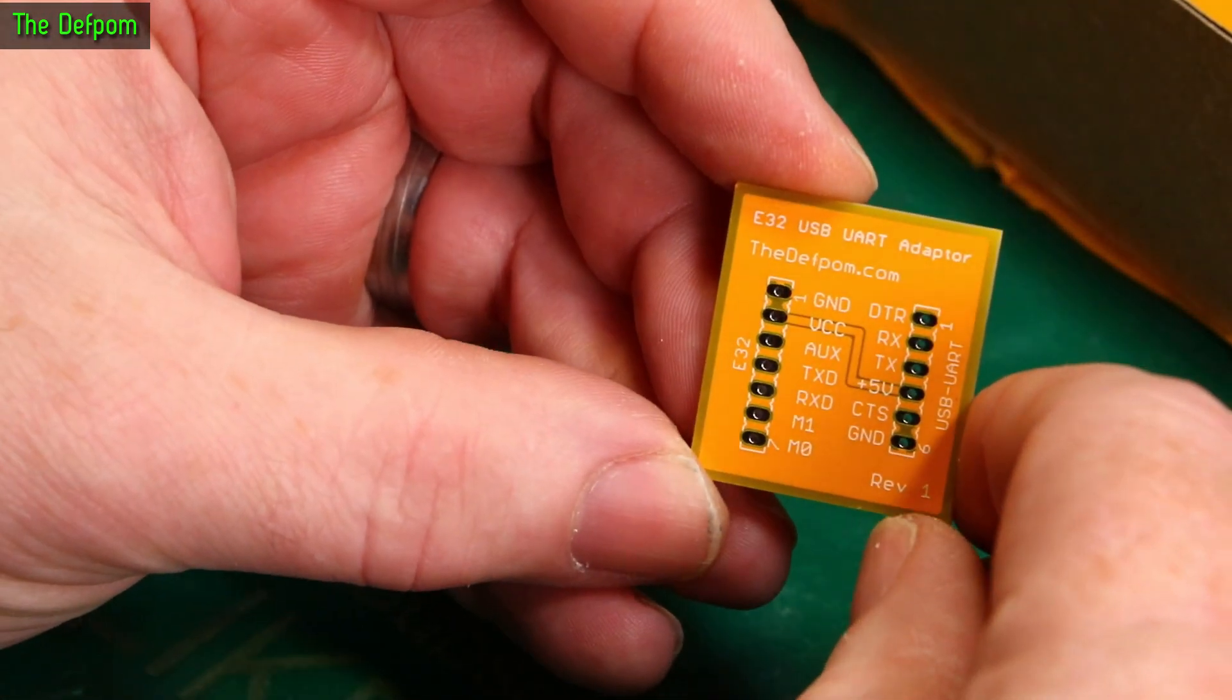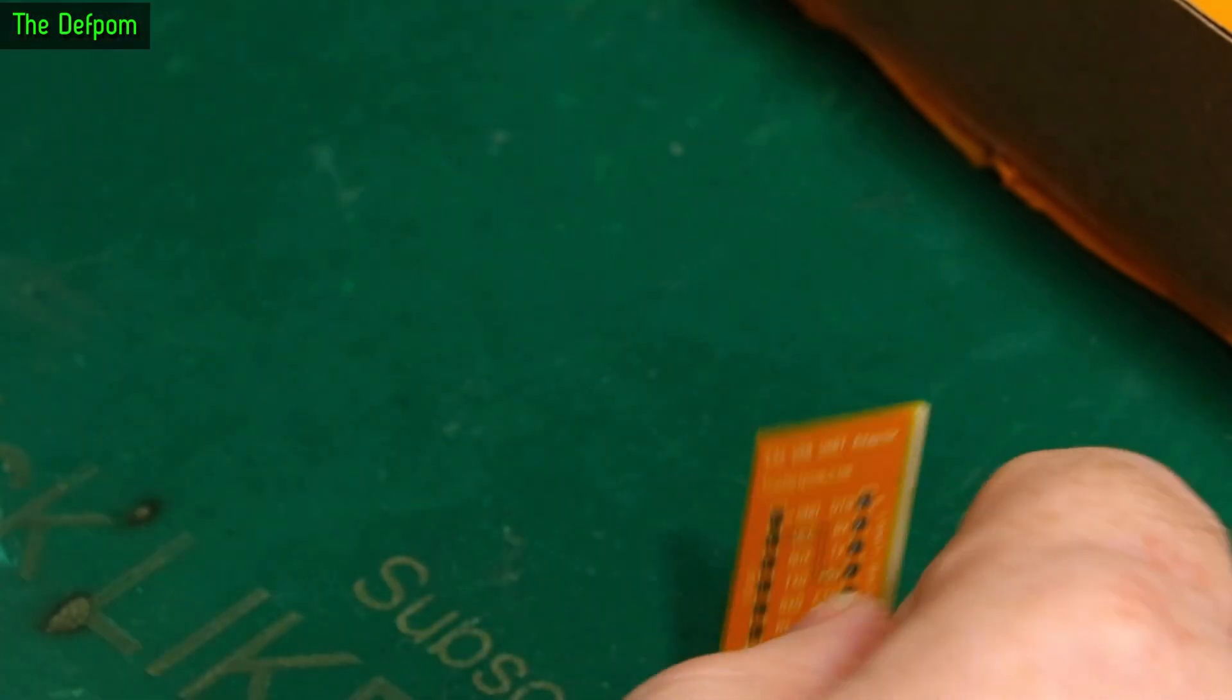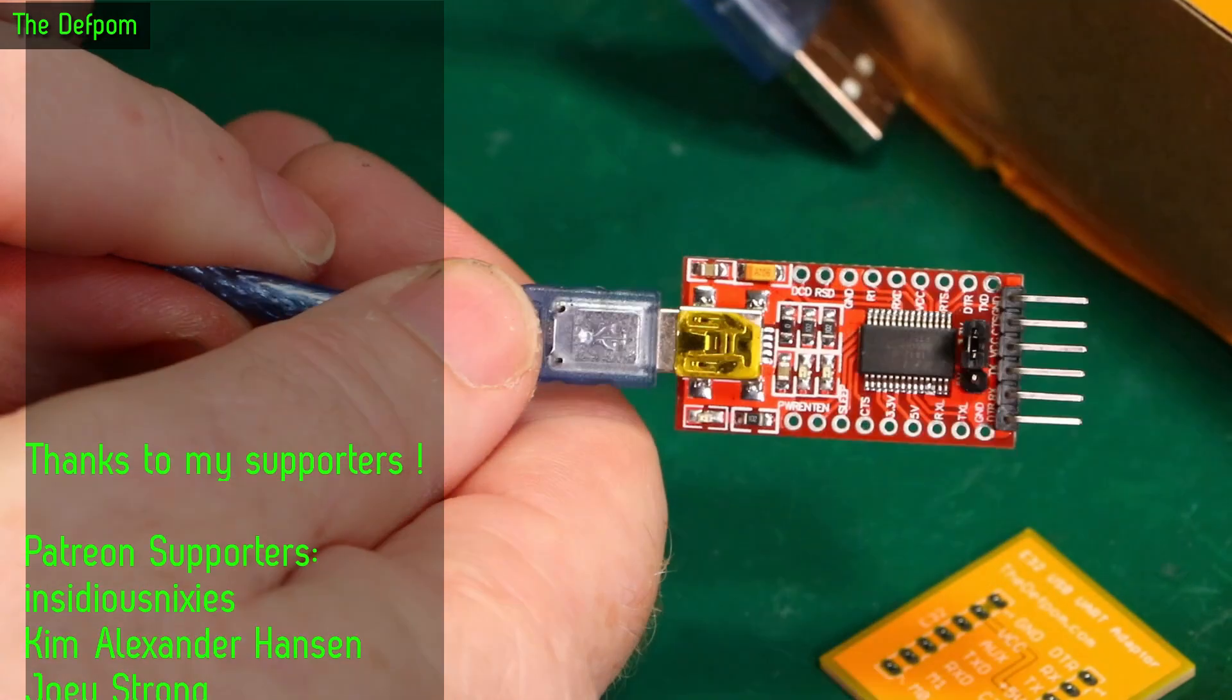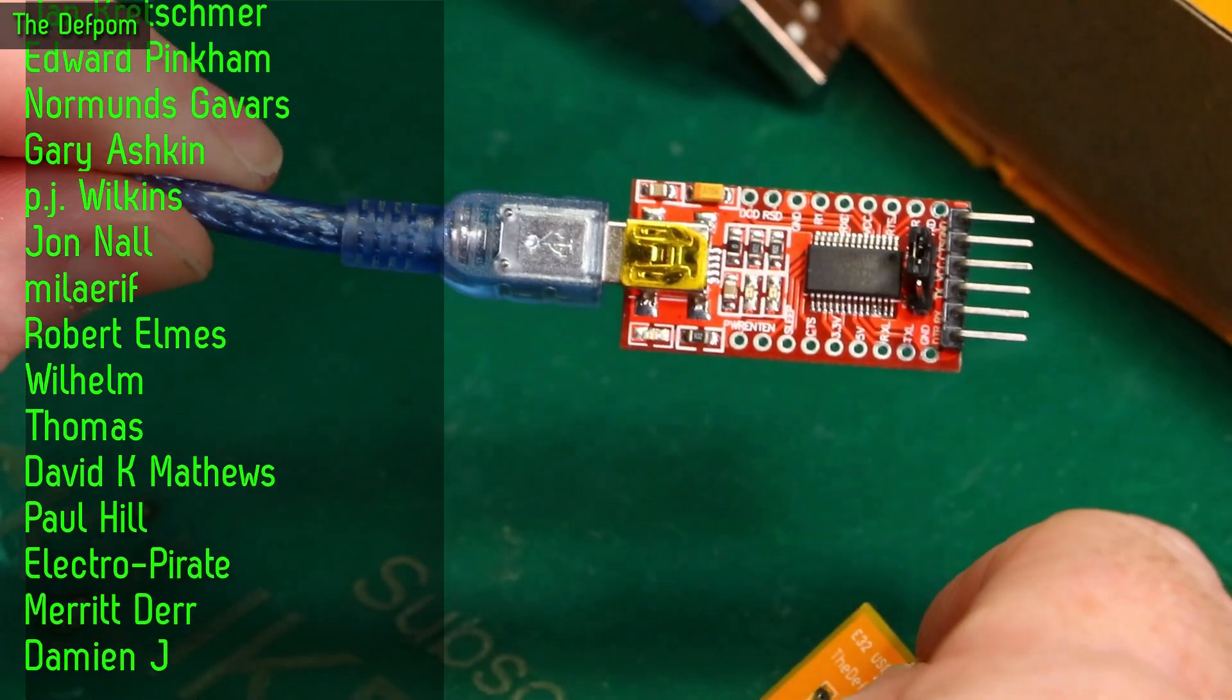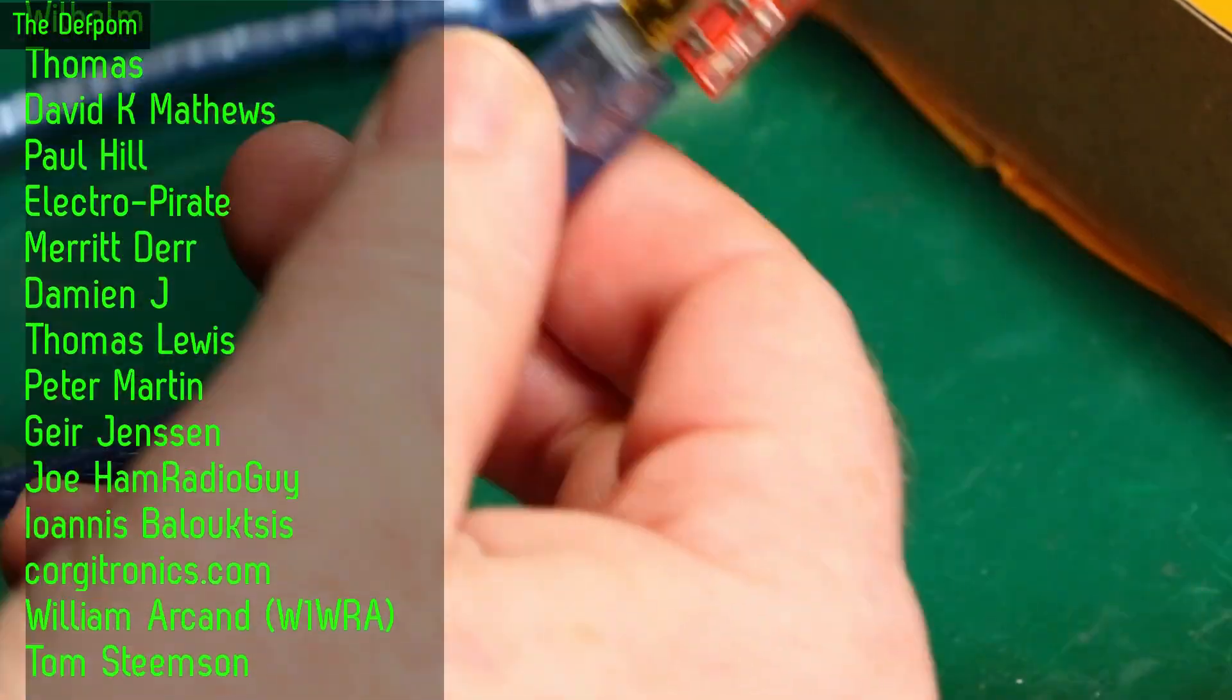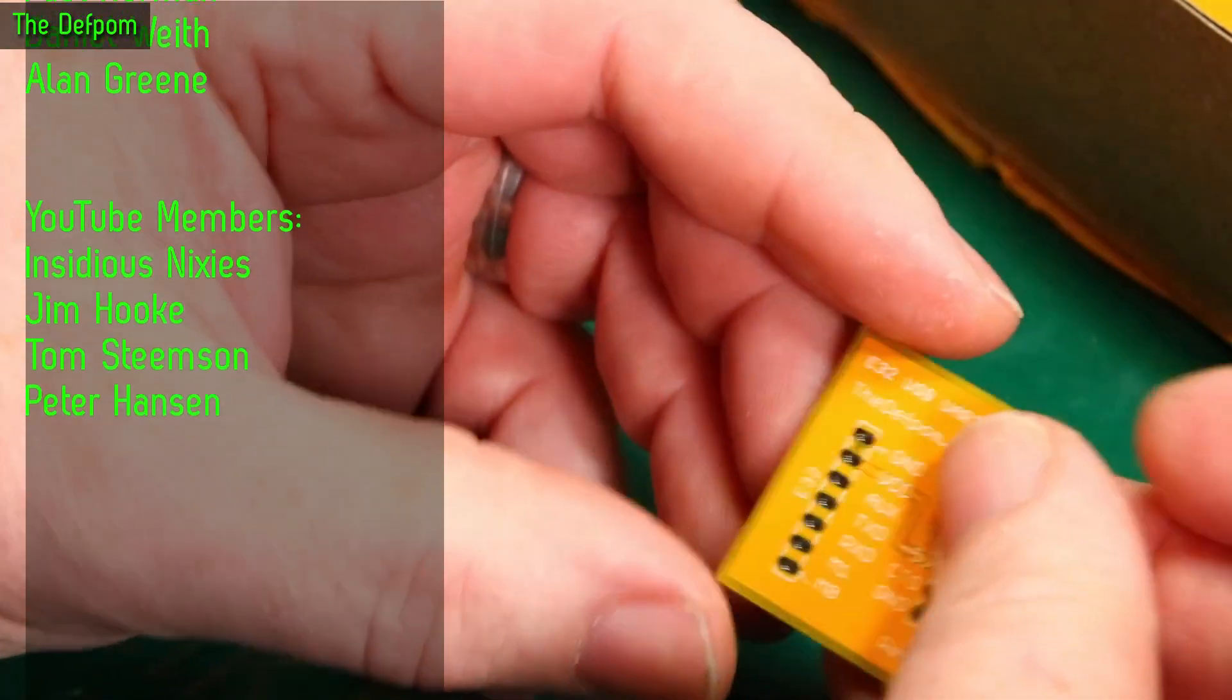But sometimes you want to set them as the default settings before you board them into a project and you have to use a bit of PC software and one of these programmers like this. For example, it's set to 3.3 volts because this is what these things want. So you can use these programmers but obviously you need to plug this into this and the pinouts not the same.